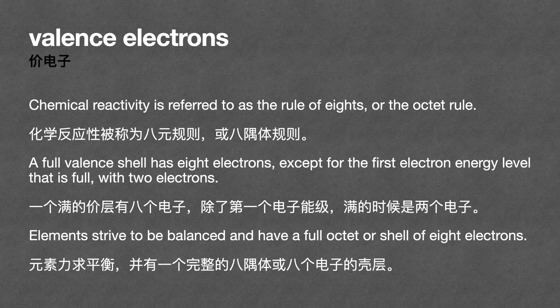A full valence shell has eight electrons, except for the first electron energy level, which is full with two electrons. Elements strive to be balanced and have a full octet, or shell of eight electrons.